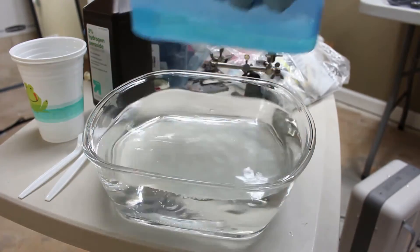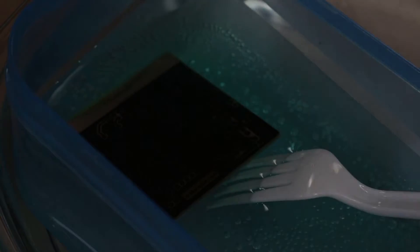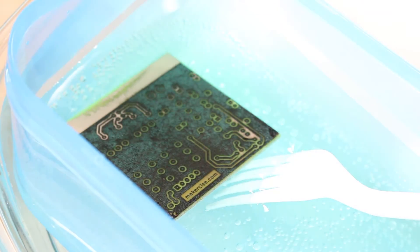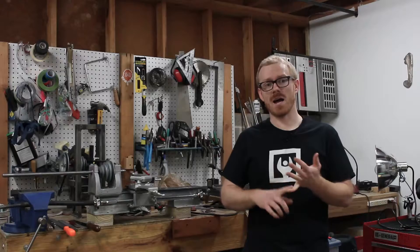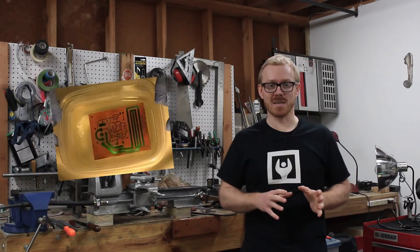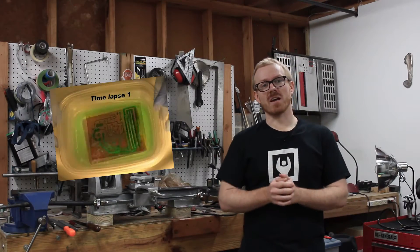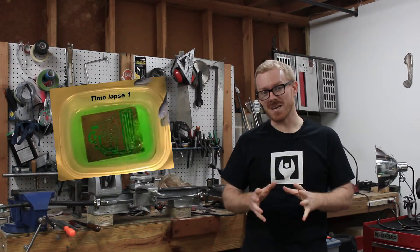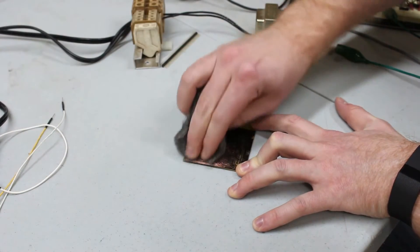I warm up the solution and drop the board in to let it etch. If you'd like more details on the hydrochloric acid-hydrogen peroxide etching process, you should definitely check out Flash001USA's video on the subject. I've got a link in the description.